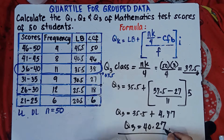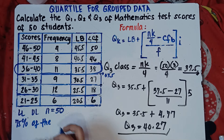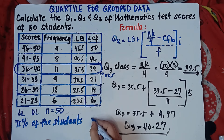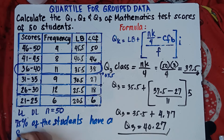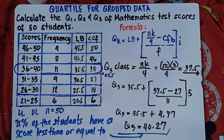All set for quartile 3. Quartile 3 is 40.27. We can conclude that 75% of the students have a score less than or equal to 40.27.